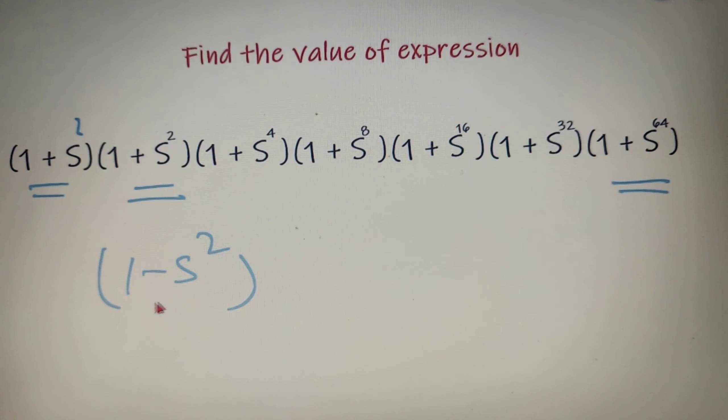My expression becomes (1 - s²)(1 + s²)(1 + s⁴) up to (1 + s⁶⁴) whole divided by (1 - s).